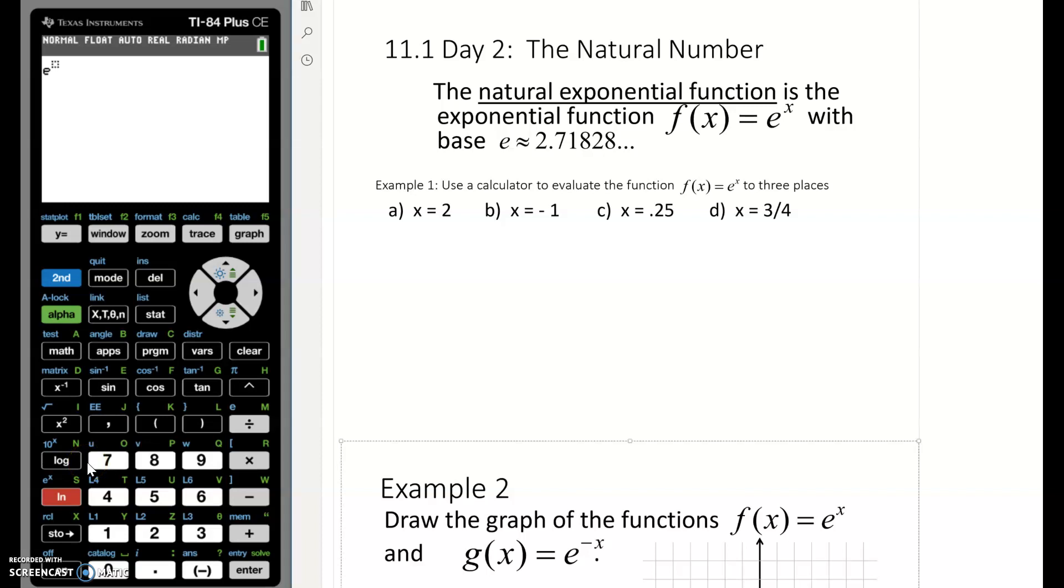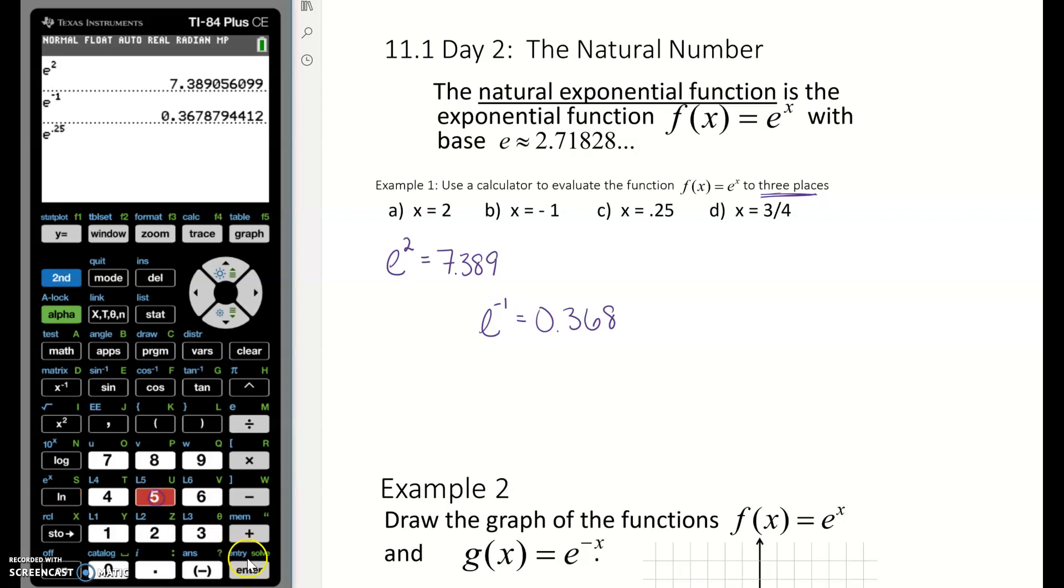So for part a we want to do e to the second, so e squared. In my calculator I type in e squared. It is 7.389, notice three places after the decimal. Part b, they want us to do e raised to the negative 1. So we try that in our calculator, e raised to the negative 1 is 0.368.